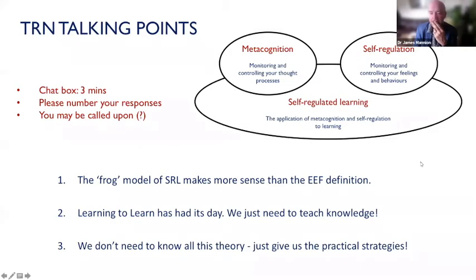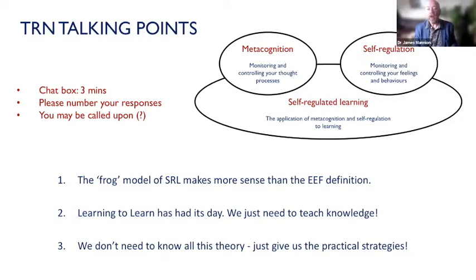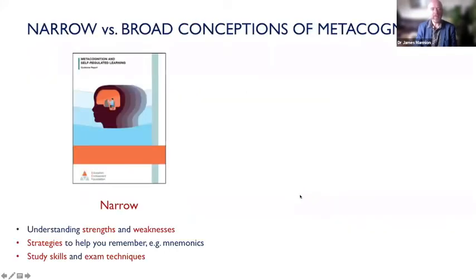Even teachers with a broad conception of learning to learn find they don't have time to teach it within the existing curriculum because there's so much to cover. I couldn't really find much time to address this agenda in my own science teaching, and nobody is more committed to this than I am. You essentially need to do both: you need discrete lessons and you need it infused across the curriculum, with transfer happening as well. You basically throw the kitchen sink at the problem - you need to do all of it.